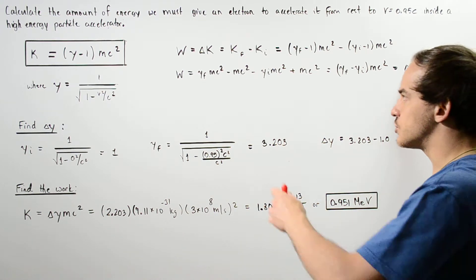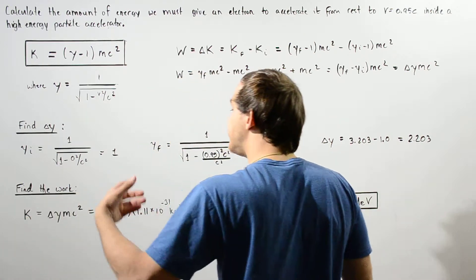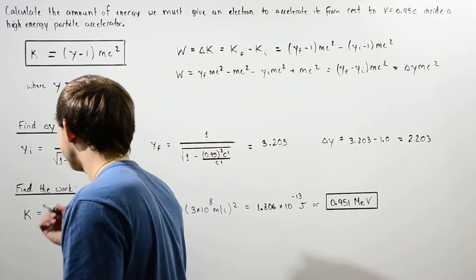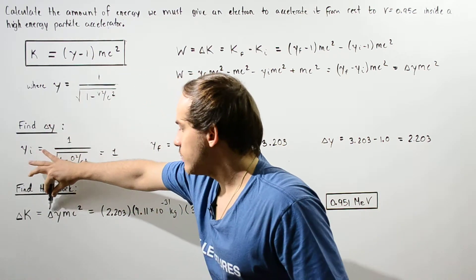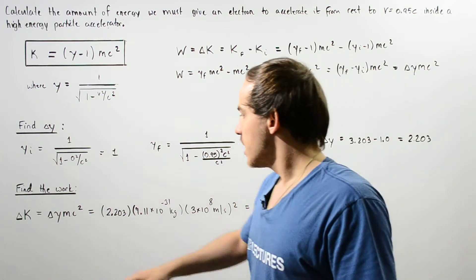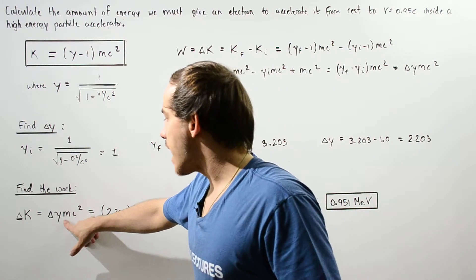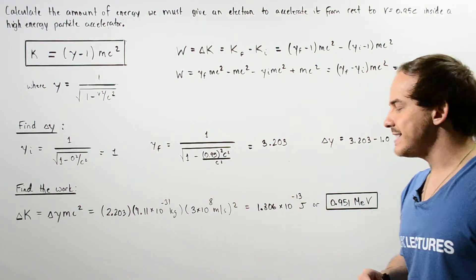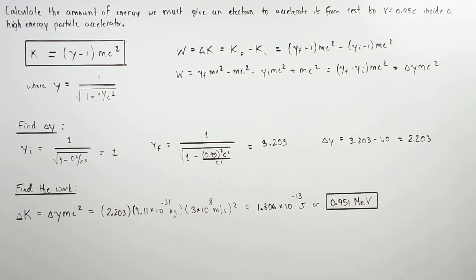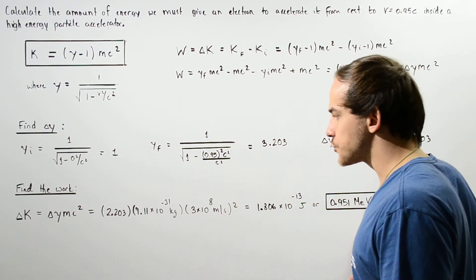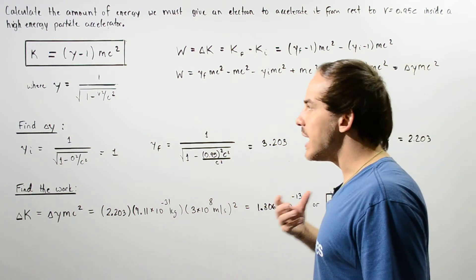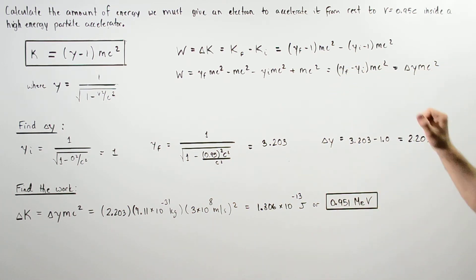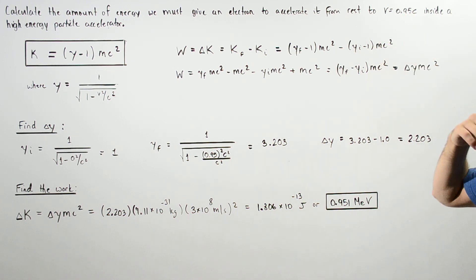Now we can apply the work-energy principle: the amount of work that needs to be done equals the change in kinetic energy, which is delta gamma multiplied by mc squared. Plugging in 2.203 for delta gamma, the mass of the electron, and the speed of light in a vacuum, we get an energy of about 1.806 times 10 to the negative 13 joules, or equivalently about 0.951 mega electron volts. This is how much energy must be gained by the electron — the work done by the electric field to accelerate it from rest to 95% of the speed of light.